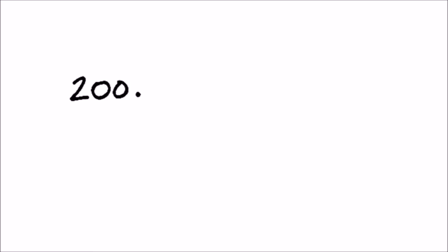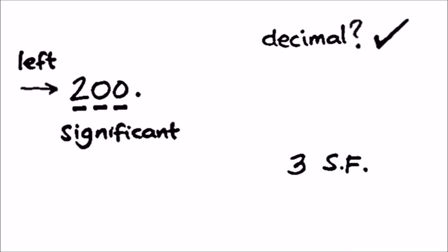How about this 200 with a decimal point? Is there a decimal point? Yes. So therefore we start from the left. It hits the first non-zero digit number — that's 2. So therefore the rest to the right is significant. So there are 3 significant figures here. Notice that 200 without a decimal point has a different number of significant figures than 200 with a decimal point.